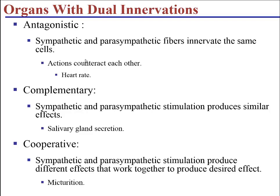Sometimes they're complementary. For example, in the mouth where we secrete saliva, both the sympathetic and parasympathetic sides will stimulate the salivary glands to secrete saliva. And sometimes they work together but have different effects to get the same result — for example, micturition, the need to urinate: we have stimulation that can control the release of the sphincters, but one sphincter is under sympathetic control and one is under parasympathetic control.